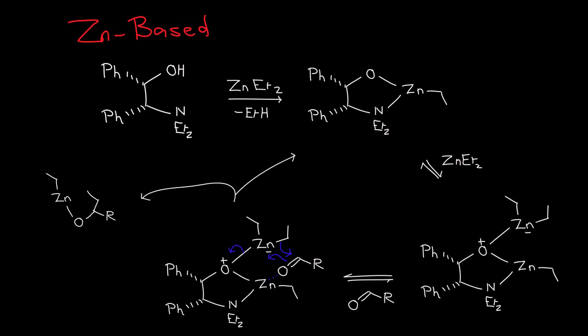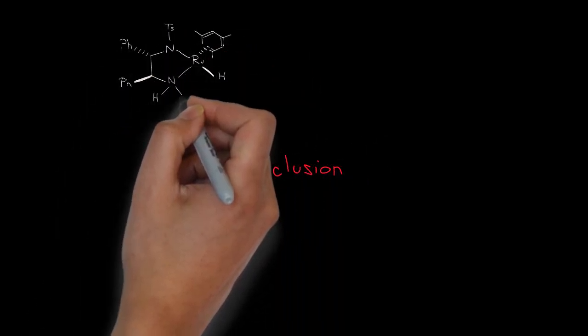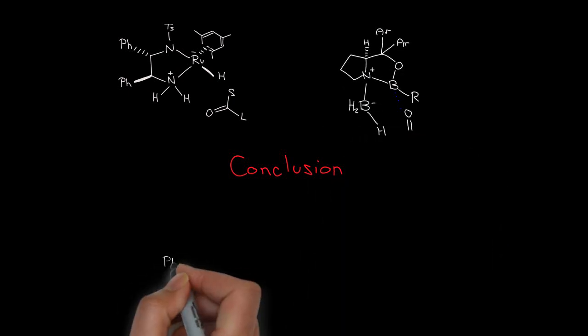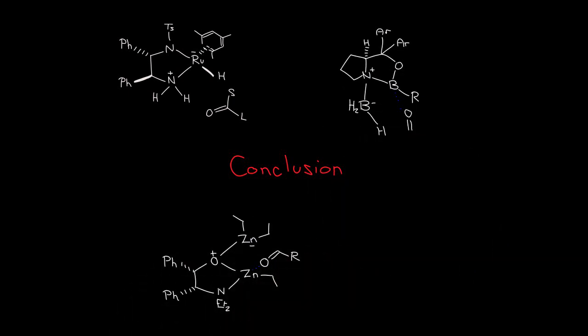There are many variants of every reaction type in this video. Different ligands on ruthenium, different boron heterocycles, and different amino-alcohols on zinc. There are also some nuances about the mechanisms that are not discussed, but there's a common theme.